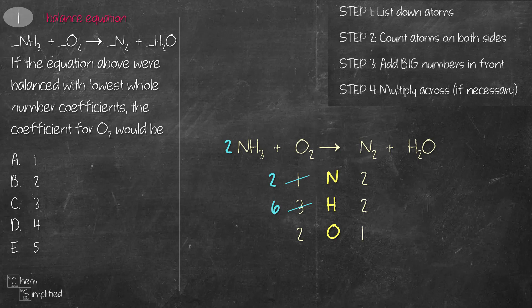Now that N is balanced, to get H balanced we add a 3 in front of H2O and that gives us 3O. To balance O we need to find a common denominator of 2 and 3, which works out to be 6. So we put a 3 in front of O2 and that gives us 6O, and we do the same on the other side — now that gives us 12H.